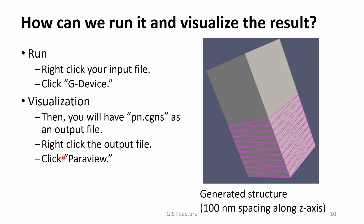How can you run the input file and visualize the output file? In order to run it, right-click the input file and you will find some options. Click G device. Then you will have pn.cgns as an output file. Right-click the output file — again you will see options. This time, click Paraview. Then you will see the generated structure.